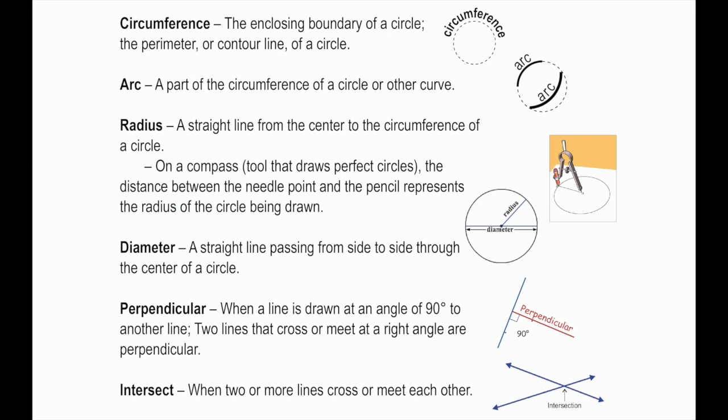On a compass, the distance between the needlepoint and the pencil represents that radius. The diameter of the circle is a straight line that passes from one side of the circle to the other, crossing through the center. Perpendicular lines are when lines intersect or meet at a 90-degree angle, or right angle.